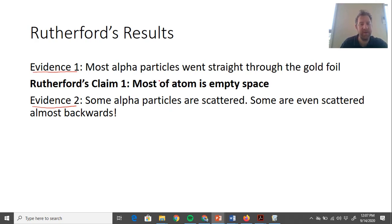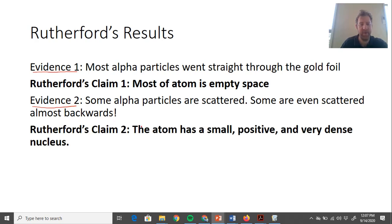You've got to look at the difference between his evidence and his claim. With the second evidence—that some alpha particles are scattered backwards—what did he claim? He claimed that the atom has a small nucleus (small because most particles went straight through), positive (because alpha particles are deflected), and very dense.